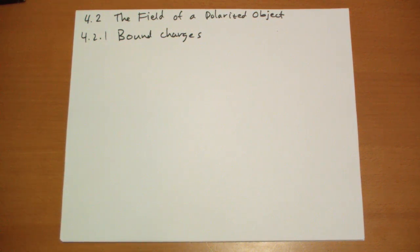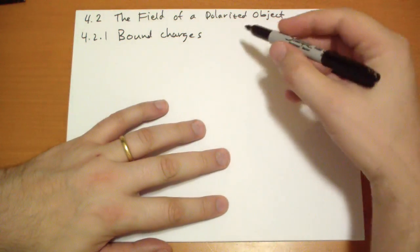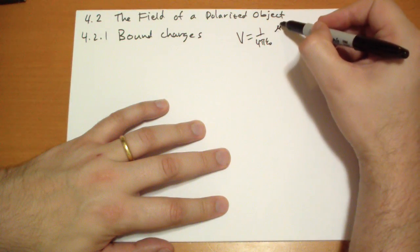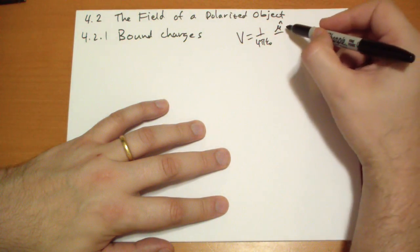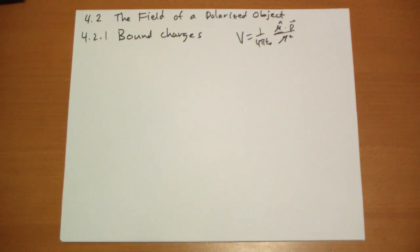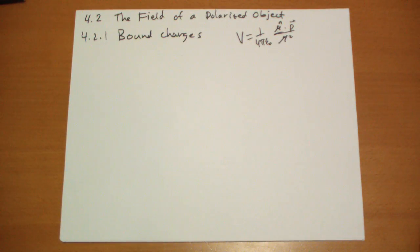Bound charges. When we're thinking large scale — billions and billions of atoms — and we have a net polarization of this material, the question is: what kind of electric field, what kind of potential does this produce? It's easier to work the potential, so we'll work the potential. We found earlier, back in chapter 3, that the potential due to a pure dipole is 1 over 4π ε₀, r̂ dot the dipole moment over r squared. So you see how the point you're looking at dots with the dipole moment and you divide by the distance squared.